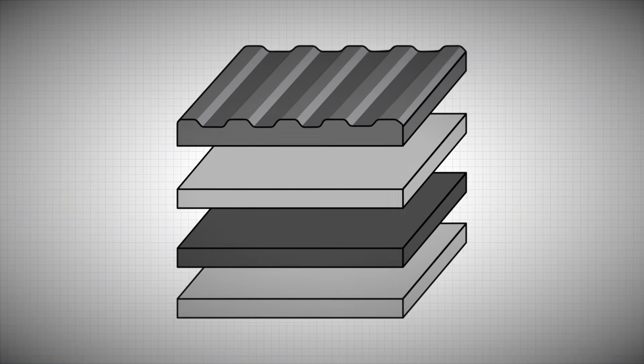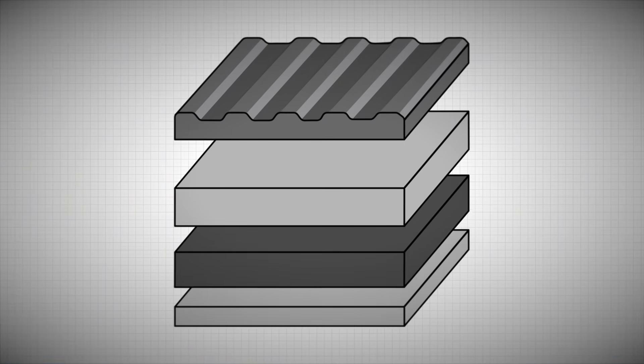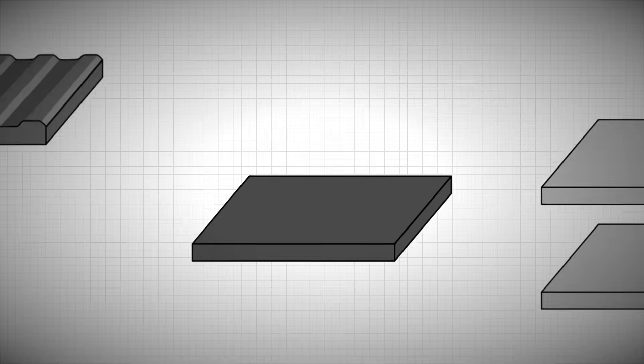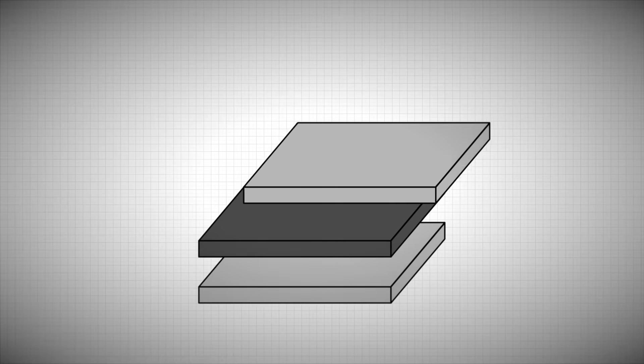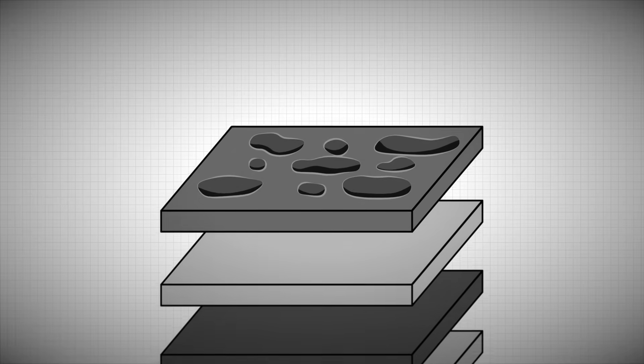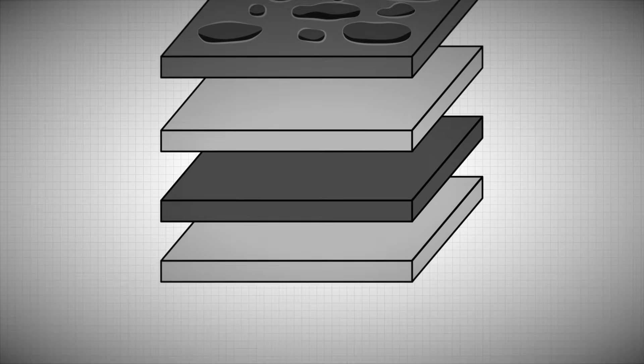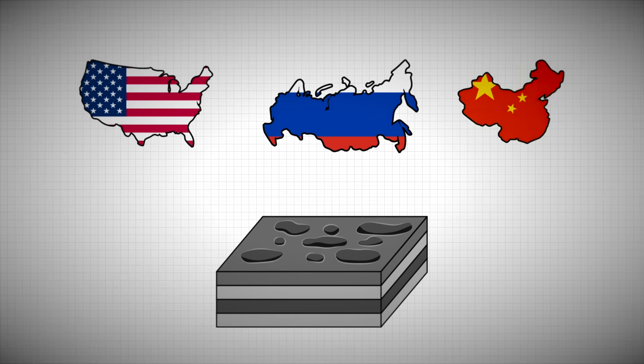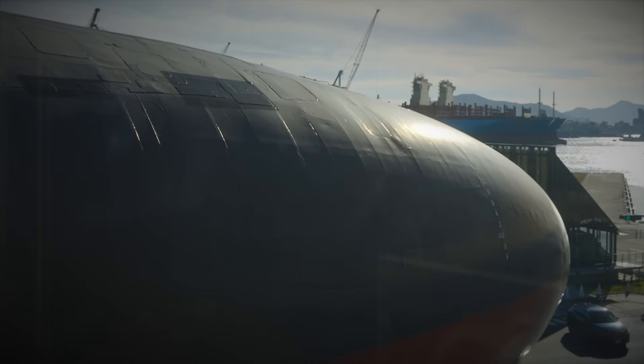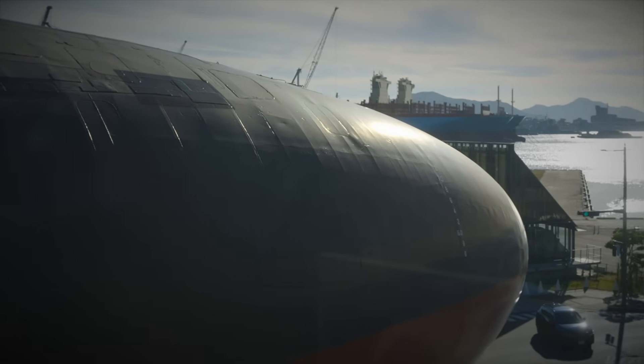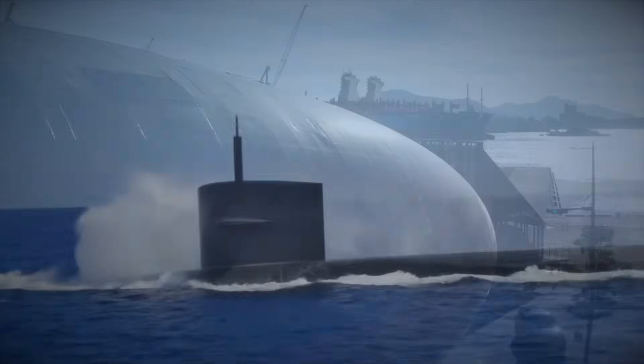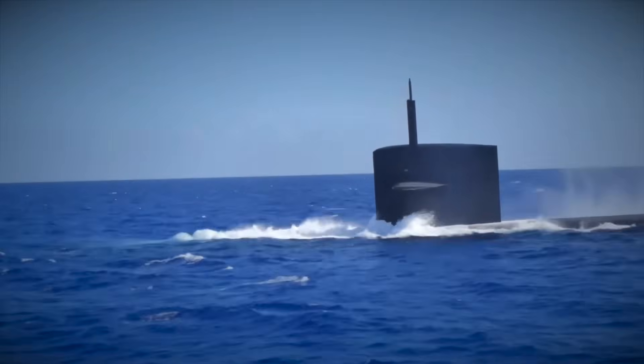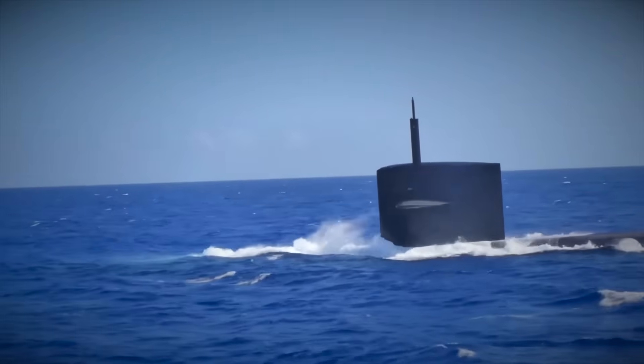Some advanced tiles even vary in density and thickness across their surface to absorb a broader range of sonar frequencies. However, the exact composition and layering techniques used on modern military submarines are usually classified, especially for nations like the US, Russia, and China. What we do know is that engineers designed these tiles not just for stealth, but also to handle deep-sea pressure and harsh saltwater environments without peeling off or falling apart.